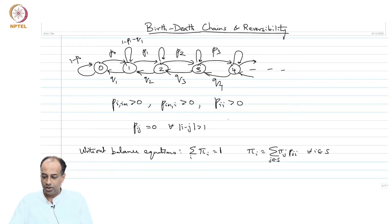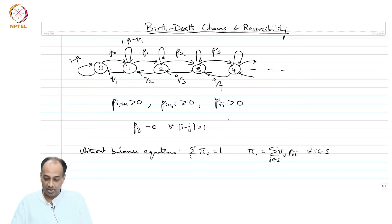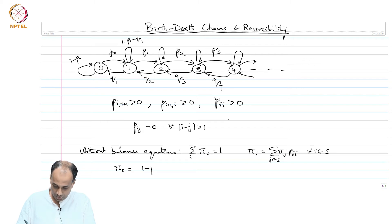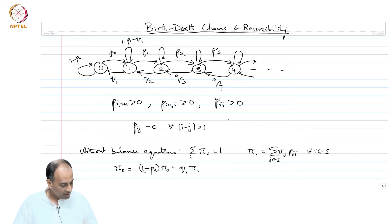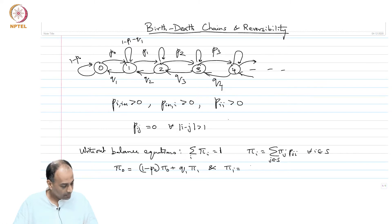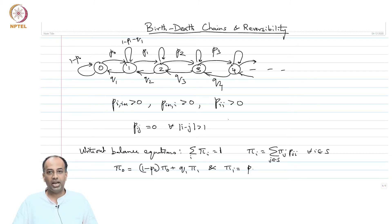For this Markov chain, P(j,i) is 0 whenever the absolute value of i minus j is greater than 1. So for this particular birth-death chain, the balance equations assume a very simple form. If you write out for state 0, you get: pi_0 = (1 - P_0)*pi_0 + Q_1*pi_1. And for all other states i greater than or equal to 1, you can get to state i only from i-1, i+1, or i.